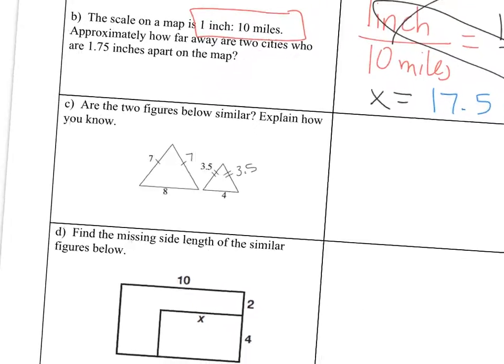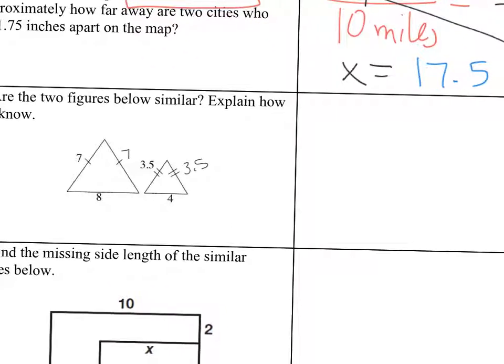So if the two figures are similar, their sides are in proportion. So what I'm going to do is I'm going to take the first triangle, and I'm going to write the side lengths out from least to greatest. So I'm going to write 7, 7, and 8. And then I'm going to take the second triangle and write these side lengths from least to greatest. So 3.5, 3.5, and 4.